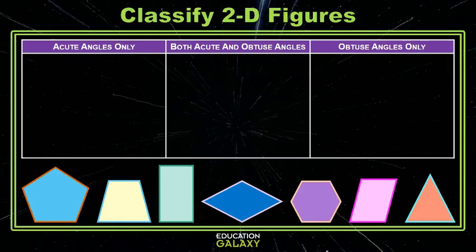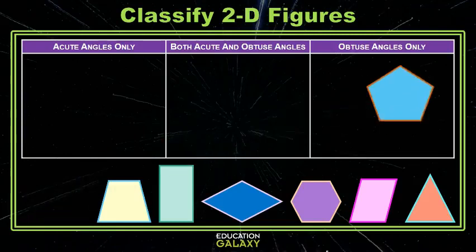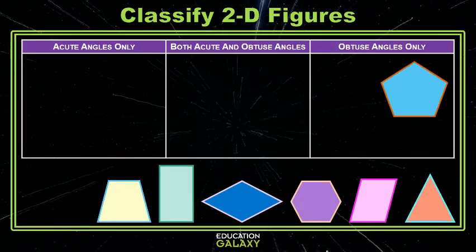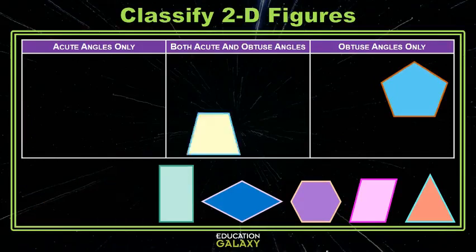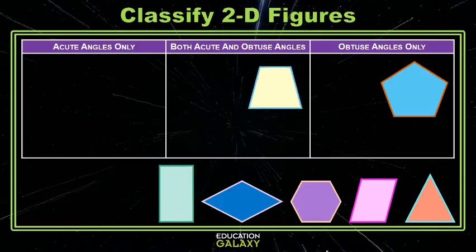So in this first image, the pentagon, it appears that I have all obtuse angles. Those all look larger than a right angle to me. We're going to put that in the obtuse angle section. The trapezoid, the next figure, appears to have two obtuse angles on top and two acute angles on bottom. I'm going to put that in the center section there.